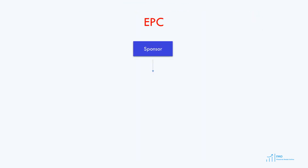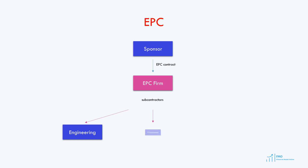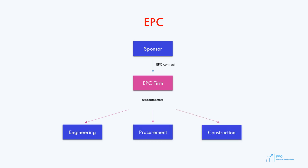In the EPC structure, the sponsor enters into the EPC contract with the EPC firm, and the EPC firm then enters into construction contracts with subcontractors that carry out engineering, procurement, and construction. It is not just one firm carrying out the whole construction process — numerous firms are involved, and the EPC firm ensures full integration of construction activities. The main advantage of the EPC contract is a single point of responsibility. If there is a problem with construction, it will be the responsibility of the EPC firm. Let's review the main terms of the EPC contract now.